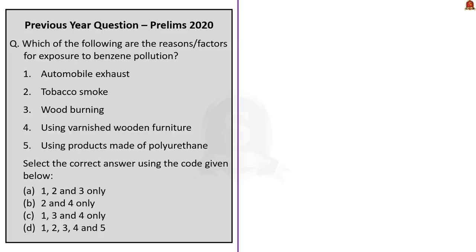Third question: which of the following are reasons or factors for exposure to benzene pollution? Statement 1: automobile exhaust. Statement 2: tobacco smoke. Statement 3: wood burning. Statement 4: varnished wooden furniture. Statement 5: using products made of polyurethane. Options: A — 1, 2 and 3 only; B — 2 and 4 only; C — 1, 3 and 4 only; D — 1, 2, 3, 4 and 5.